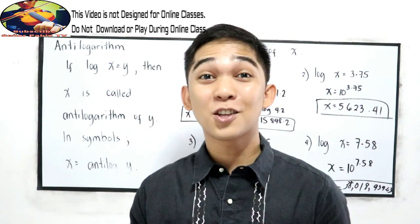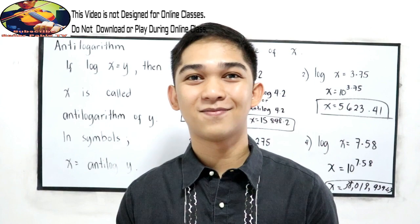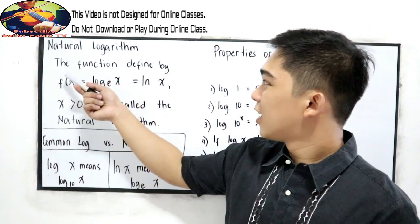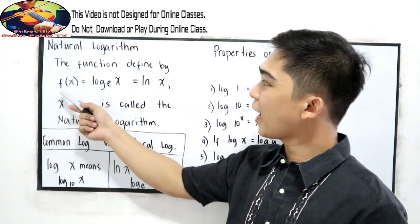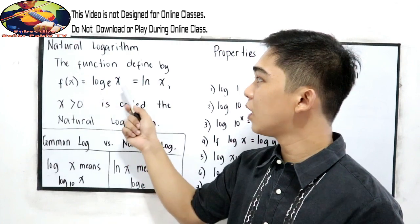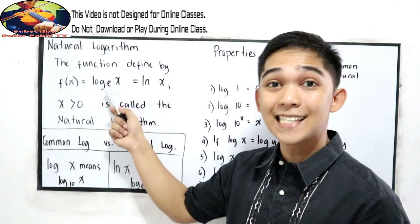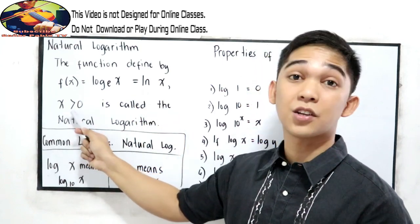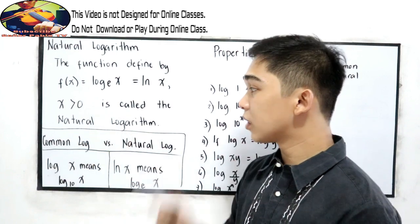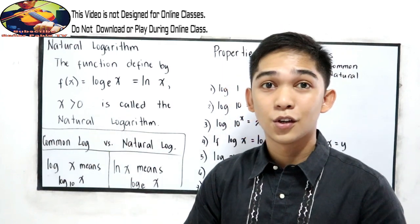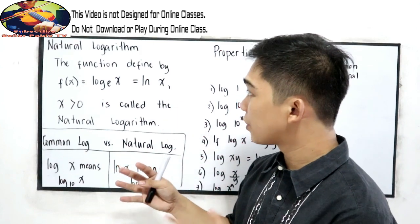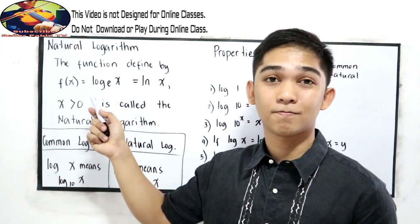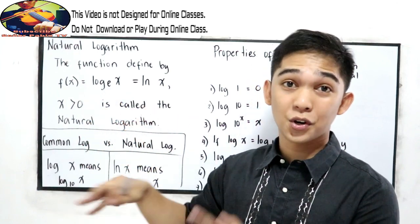The next lesson will be the natural logarithm. Natural logarithm is the function defined by L of x is equal to log x base e, and that is equal to ln x, where x is greater than zero. It's called the natural logarithm. In this lesson, we will introduce you to ln x and the e symbol — this is also the introduction to your calculus lesson.